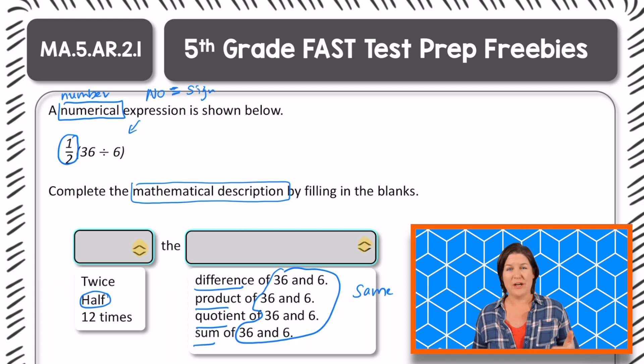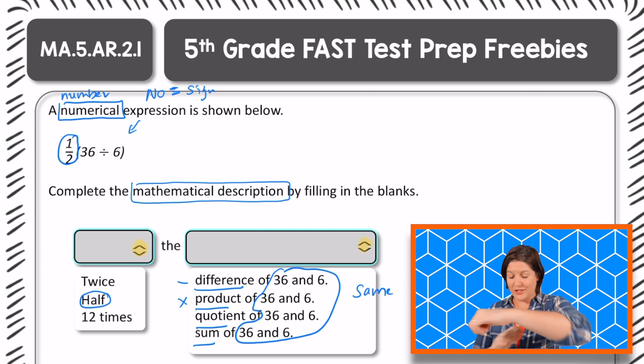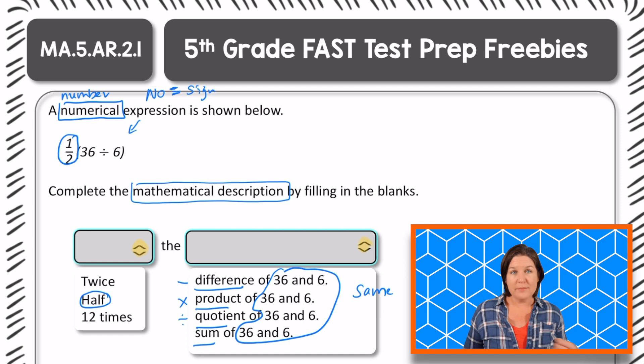well, the difference would mean that we're doing which operation? Subtracting, right? The product of 36 and six, that would mean that we're doing which operation with 36 and six? Multiplying. The quotient of 36 and six, when we are finding the quotient, which operation are we performing? Division, yeah. And for sum, the sum of 36 and six, which operation is that? Addition. Awesome.